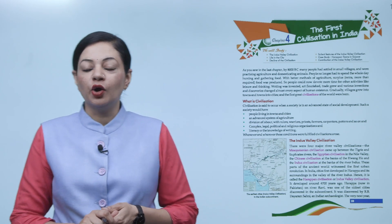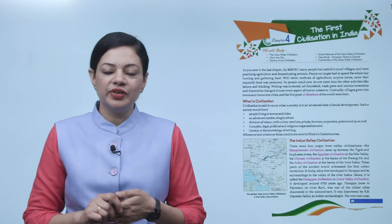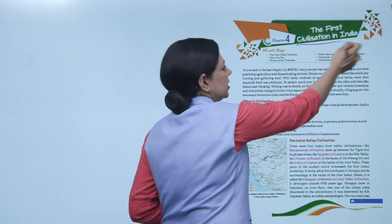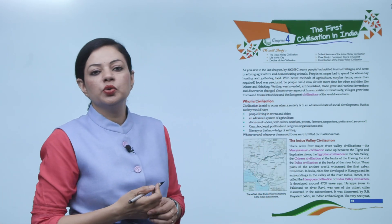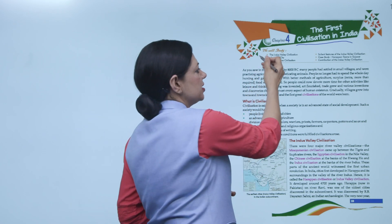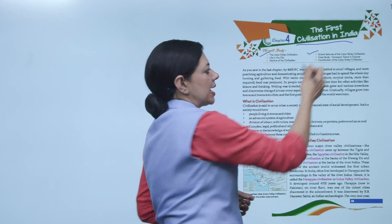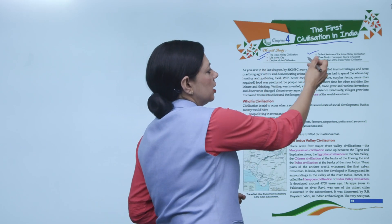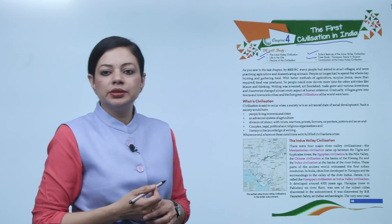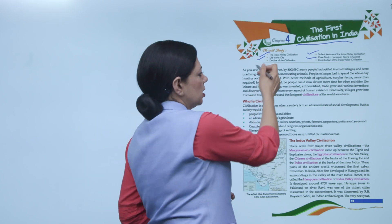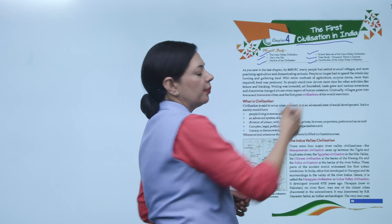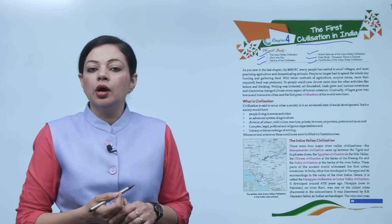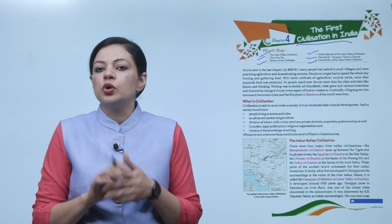Hello students, today we are starting a chapter called 'The First Civilization in India.' In this chapter, we are going to read about the Indus Valley Civilization, its salient features, life in the city, a case study about the Harappan towns in Gujarat, the decline of the civilization, and its contributions.